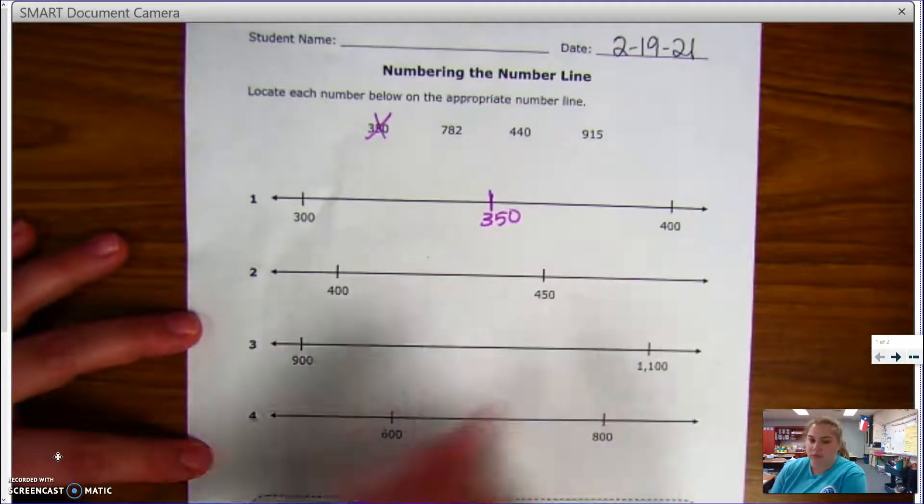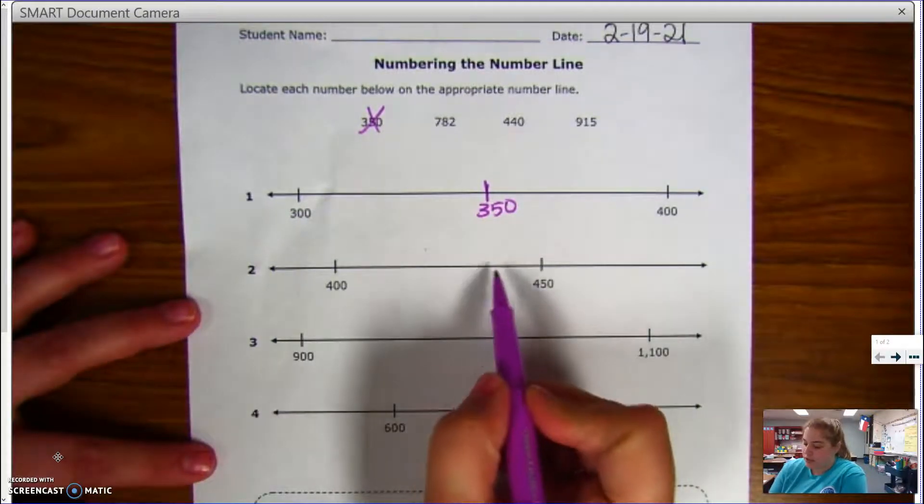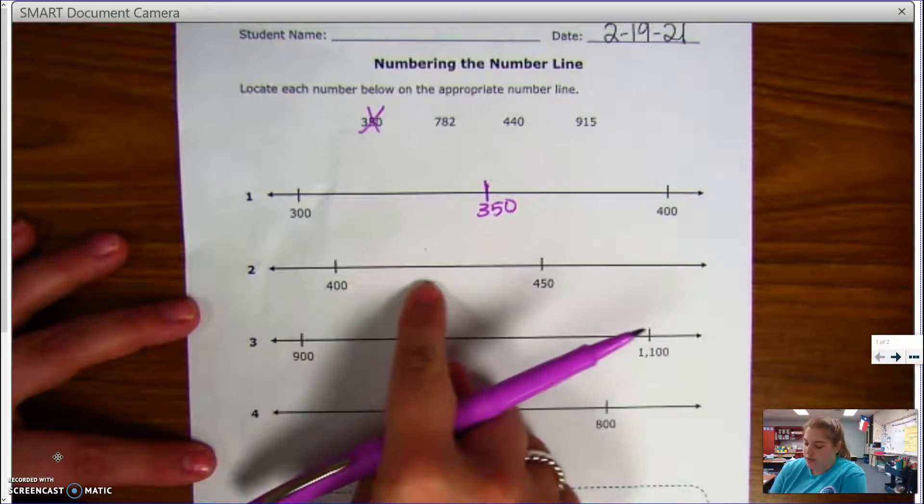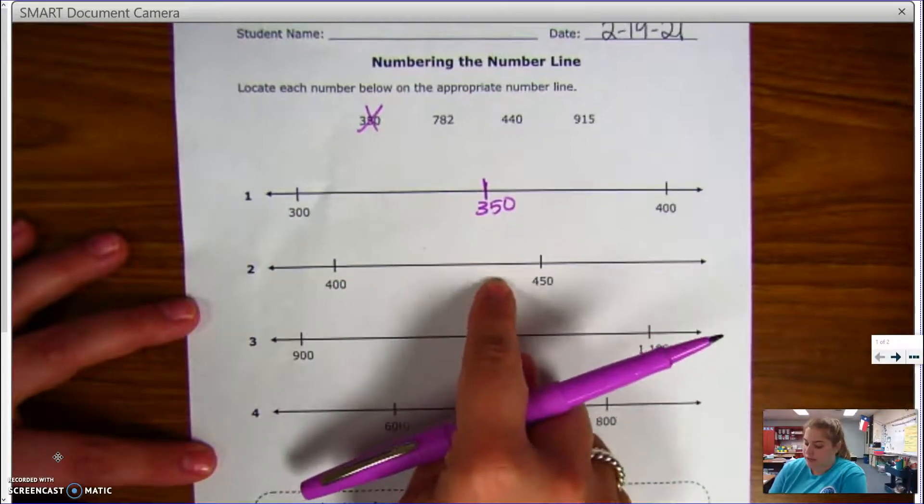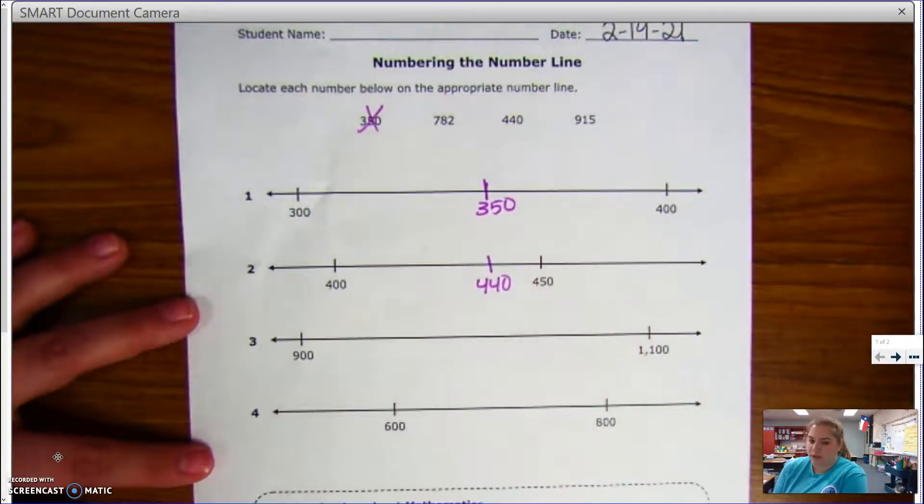I know in my head that 440 is closer to 450 than it is to 400. There's 40 numbers and then 440 and then 10 more numbers, so I'm going to try to make sure that my number line makes sense when I put my number there.